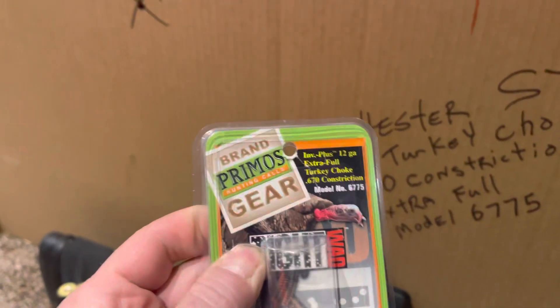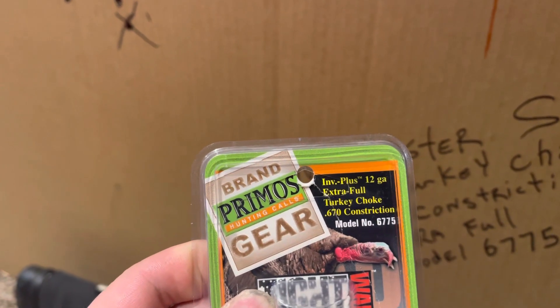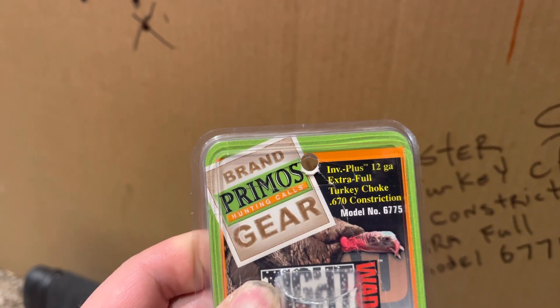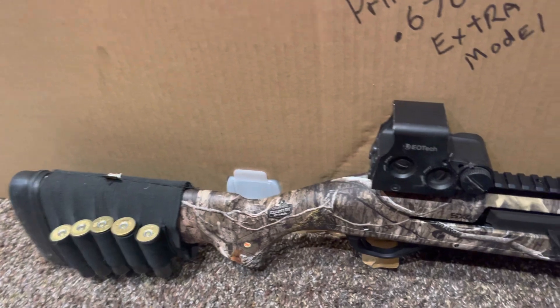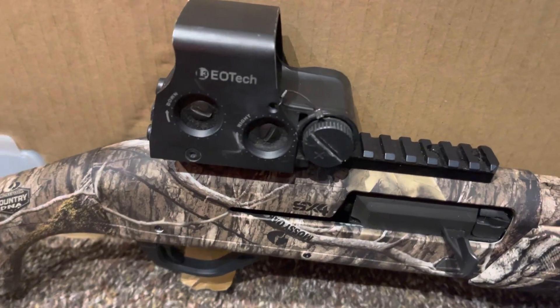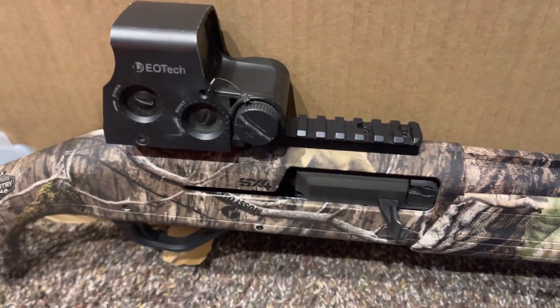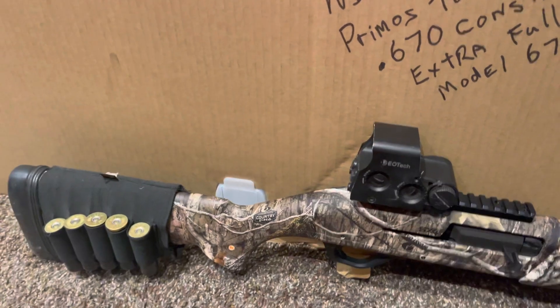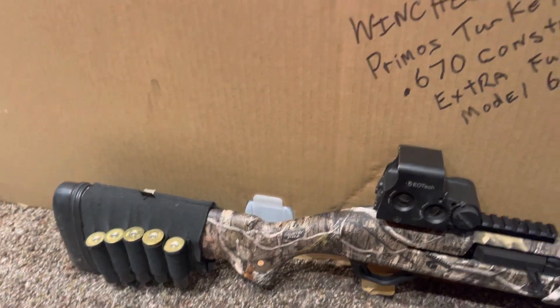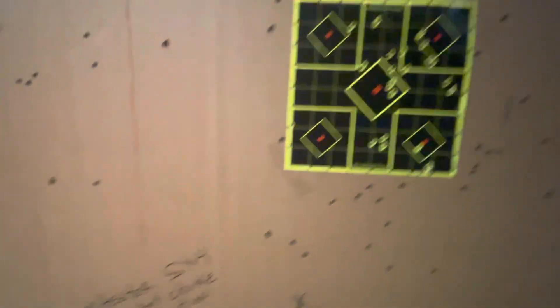We got the Primos Extra Full Turkey Choke, 0.670 constriction, and we're using the Winchester SX4. We got the EOTech sight on there, I think that's the EOTech 512, and I've got the Tacticam 6.0 mount underneath as well. Really liking the SX4 so far.